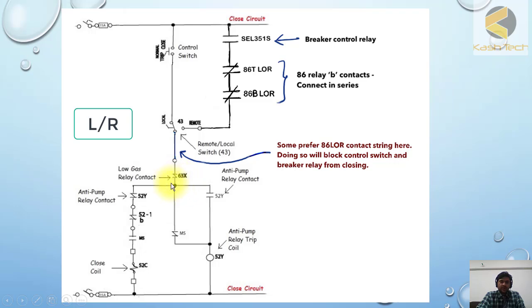And these are the breaker anti-pumping relay. I will be explaining later on the circuit breaker contact and I will explain why it is in series here. And then again, this is an anti-pumping contact and then closing coil will be energized.